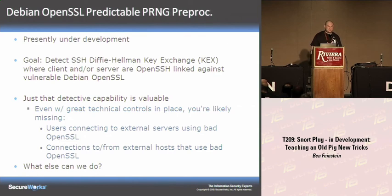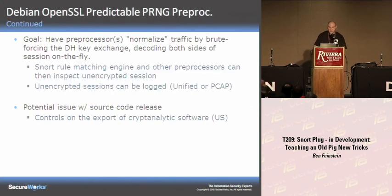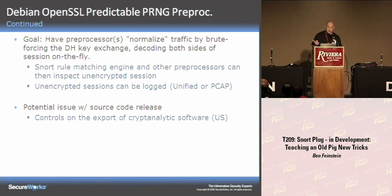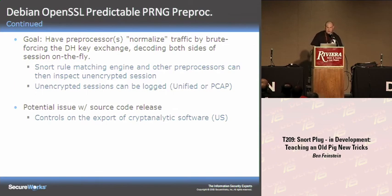This will be able to detect users connecting to external servers using bad SSL, and connections coming in from outside with unpatched Debian SSL. The goal in the near future is to actually decode both sides of the session. Right now I calculate the Diffie-Hellman shared secret, squirrel away some session data into the session storage, and then generate alerts saying the client or server is vulnerable. The cool thing about normalizing it is that all other Snort preprocessors and rules could then inspect the unencrypted content, and unencrypted sessions could be logged out to PCAP or Unified2.